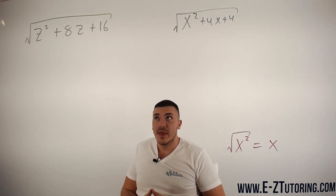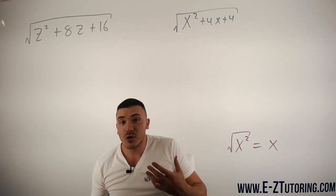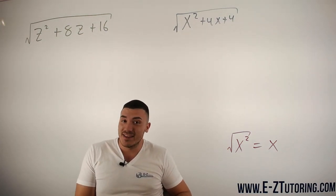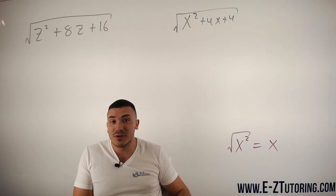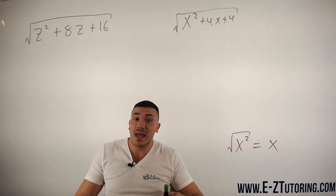Here's why. We are going to take this trinomial and write it as something squared. When we write it as something squared, then we can simply cancel the square root of the square and we're left with a simple binomial.